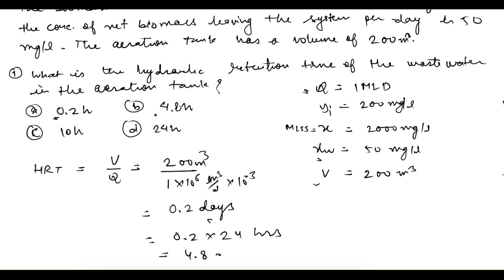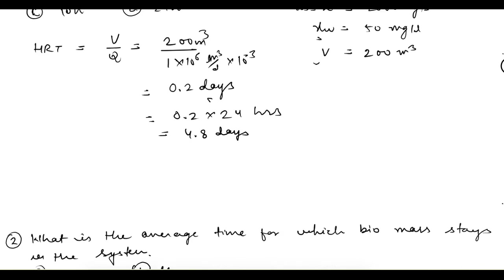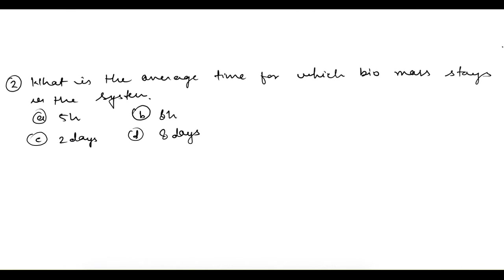All the options are given in hours, so let's convert: 0.2 days × 24 hours = 4.8 hours. So 4.8 hours is the answer. That was straightforward.